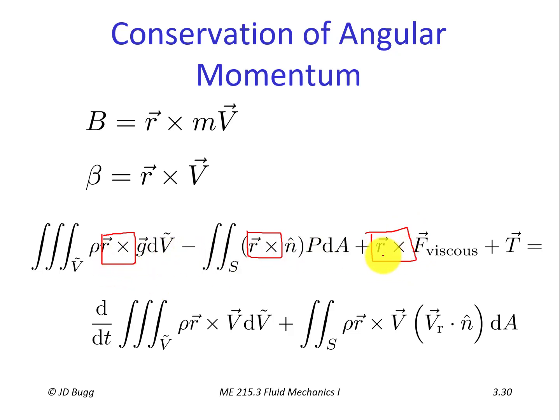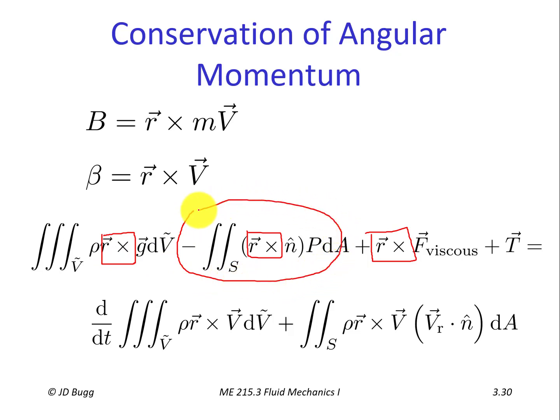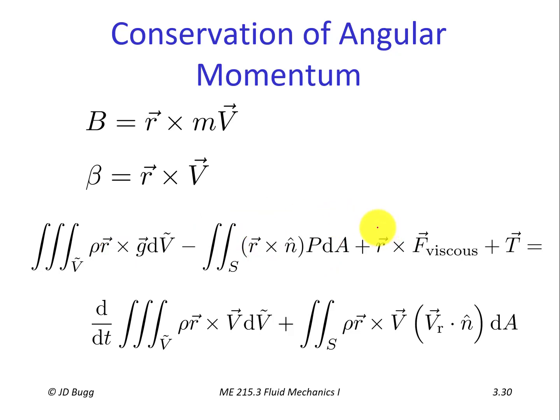The physical meaning of each term: in linear momentum the first term was the body force; here it is the moment or torque created by that body force about the origin of our coordinate system, converting it to a moment by taking r cross g instead of just g. The next term represents pressure forces, but specifically the torque or moment created by all pressure forces about the origin of the coordinate system. Similarly, the following term is the moment or torque created by viscous forces about the coordinate system origin.